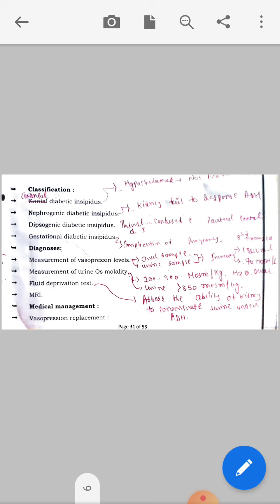Next one is nephrogenic diabetic insipidus. Nephrogenic means related to the kidney. In nephrogenic diabetes insipidus, the kidney fails to respond to ADH. The kidney fails to do its particular work. Urine output increases and specific gravity decreases. The urine output increases and specific gravity is low, indicating kidney dysfunction.